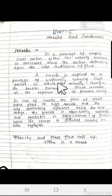A nozzle is defined as a passage of uniformly varying cross section in which the velocity increases at the expense of its pressure energy. In unit 3 we have seen that the section is varying. A nozzle is uniform varying cross section area passage where the velocity of the fluid flowing inside increases by the expense of its pressure energy.